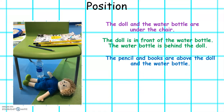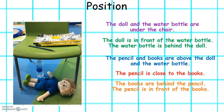The pencil and the books are above the doll and the water bottle. The pencil is close to the books. The books are behind the pencil and the pencil is in front of the books.